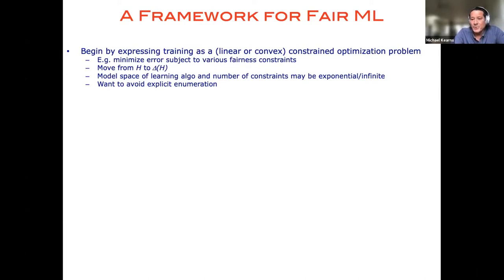So concretely, I might say find the neural network which minimizes the classification error subject to the error rates on these five racial groups being equal or approximately equal. And to do this, we're going to need to move from whatever our initial class of models was to mixture models so that we kind of convexify the problem. And we're going to basically linearize or convexify these problems in a brute force way.